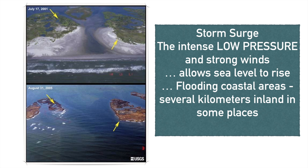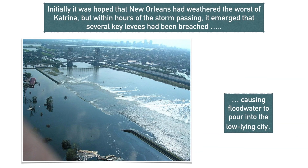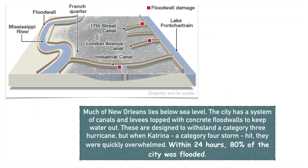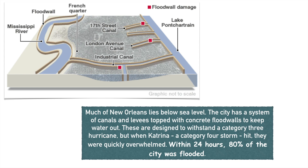You can see the damage the storm surge caused in the images. It caused extensive flooding over many kilometers of land. Initially many people hoped that New Orleans would miss most of the storm. However, it later emerged that many key levees had been breached. Much of New Orleans lies below sea level, so this was particularly damaging. The flood walls didn't hold back the water and within 24 hours 80% of the city was flooded.